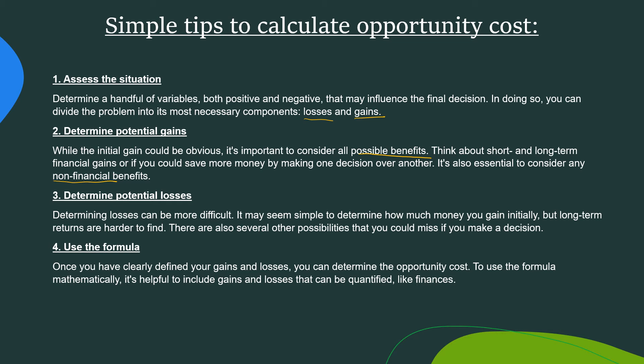Number three: determine potential losses. Determining losses can be more difficult. It may seem simple to determine how much money you gain initially, but long-term returns are harder to find. There are also several other possibilities that you could miss if you make a decision. Number four: use the formula. Once you have clearly defined your gains and losses, you can determine the opportunity cost. To use the formula mathematically, it's helpful to include gains and losses that can be quantified, like finances.